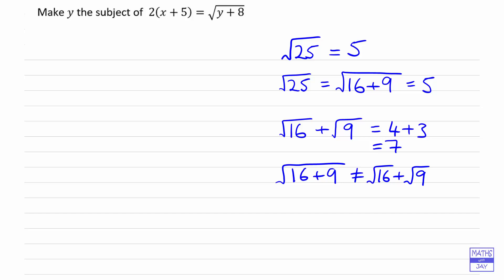So the relevance of that to this question is that we cannot say in the same sort of way... We want to isolate the y, but what we cannot do is say that the right hand side is the same as the square root of y plus the square root of 8. So that's something we can't do.